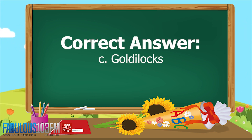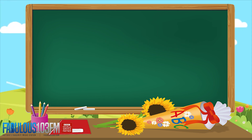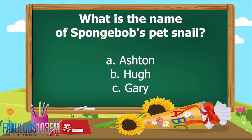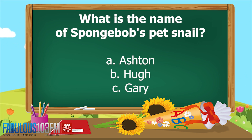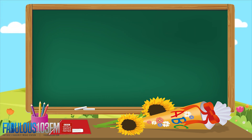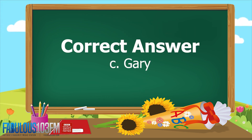And the correct answer is C, Goldilocks! The second question from yesterday: what's the name of SpongeBob's pet snail? Is it A) Ashton, B) Hugh, or C) Gary? What did you think — A, B, or C? Shout your answer at the radio as loud as you can so I can hear you! And the correct answer is of course C, Gary.